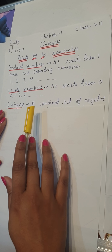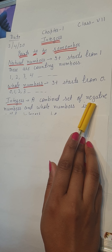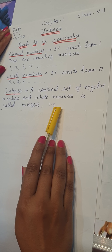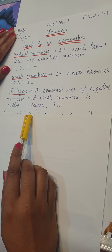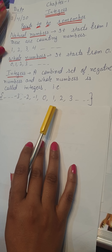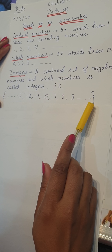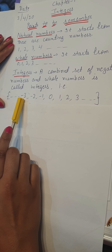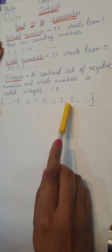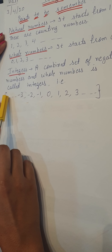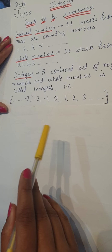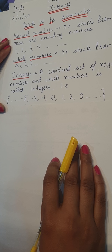Integers is a combined set of negative numbers and whole numbers. We can write in curly brackets: minus 3, minus 2, minus 1, 0, 1, 2, 3 and so on. The dash means they extend up to infinite. So this is about integers.